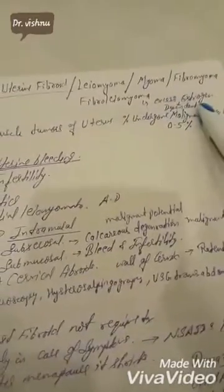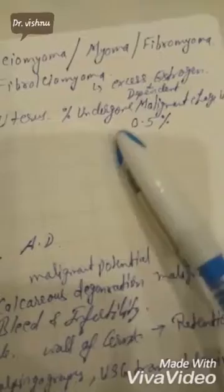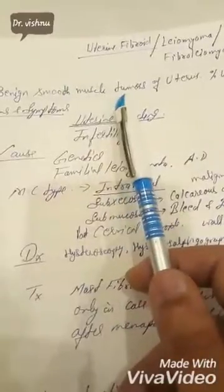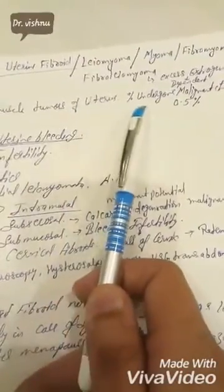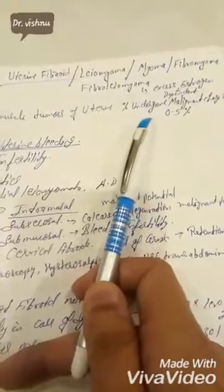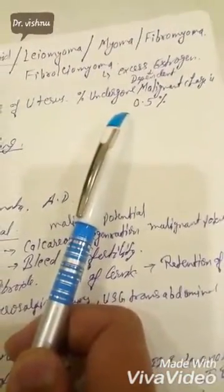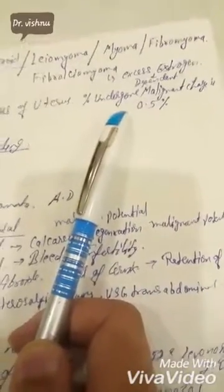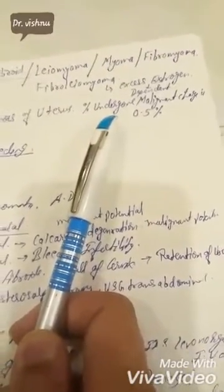These are estrogen-dependent tumors. Uterine fibroids are benign smooth muscle tumors of the uterus. They are usually benign, but they can undergo malignant changes in only a very small percentage — 0.5 percent. This is a commonly asked question in examinations.